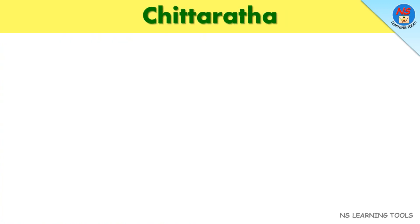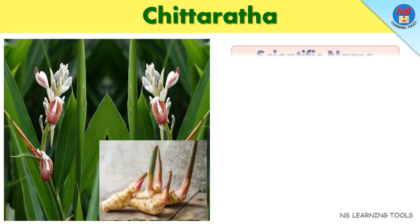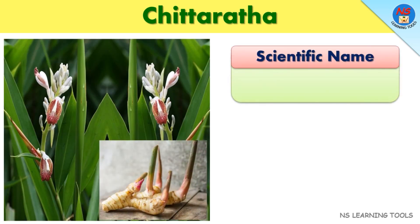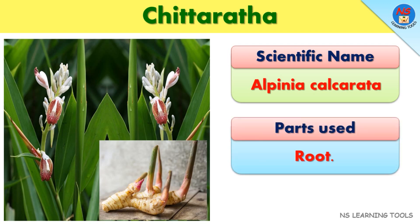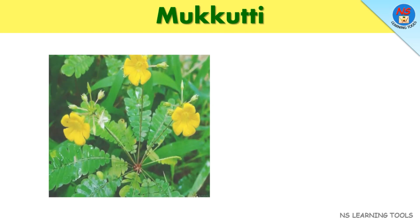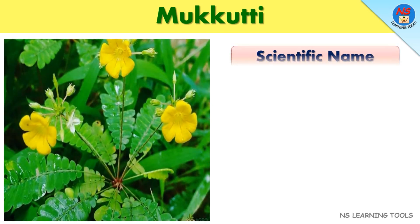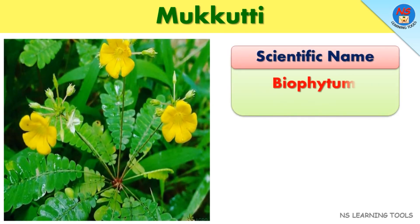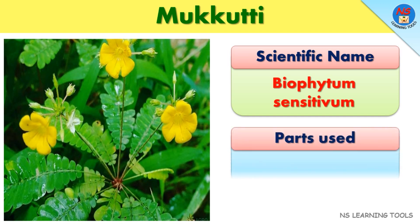Chitaratha. Scientific name: Alpinia calcarida. Parts used: Root. Mucca tie. Scientific name: Biophidum sensitivum. Parts used: Whole plant.